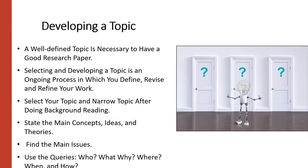Next, we'll move to developing your topic. A well-defined topic is necessary to have a good research paper. Selecting and developing a topic is an ongoing process in which you define, revise, and refine your work. In selecting your topic and narrowing your topic, you would do this after you've done some background reading. You would state some of the main concepts, ideas, and theories in developing a topic, and then you would find some of the main issues involved with the topics. Then you would be in the process of narrowing your topic down from some broad ideas from what you started off with to consistently narrowing it down to make it manageable and make it significant, dealing with a small aspect of a large subject area, a meaningful topic that is a part of the subject area, but not encompassing the whole subject area itself.